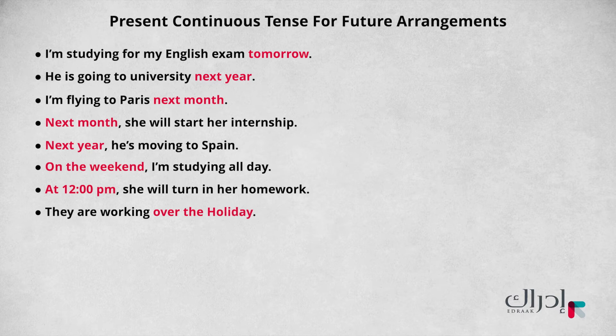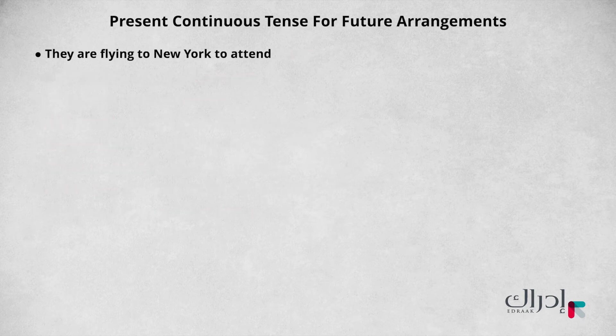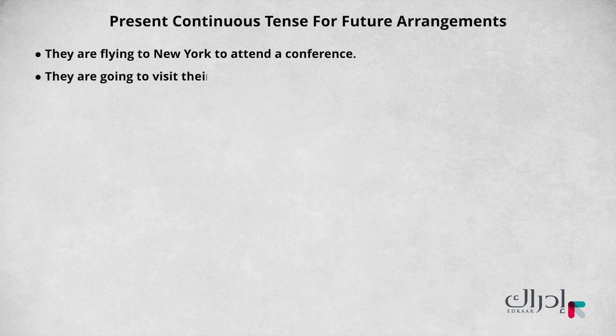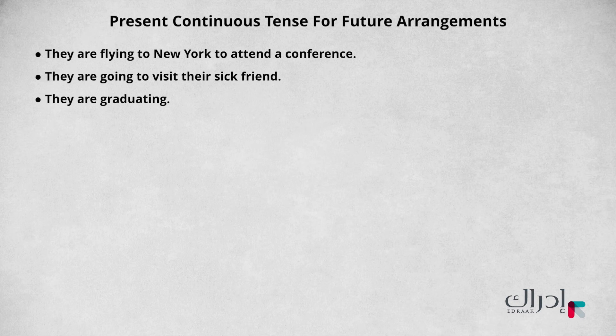Now, look at these examples: They are flying to New York to attend a conference. They are going to visit their sick friend. They are graduating. In these examples, we see that time references are often, but not always, used when the present continuous is used to talk about future arrangements.